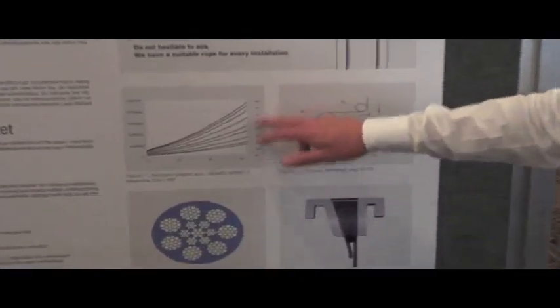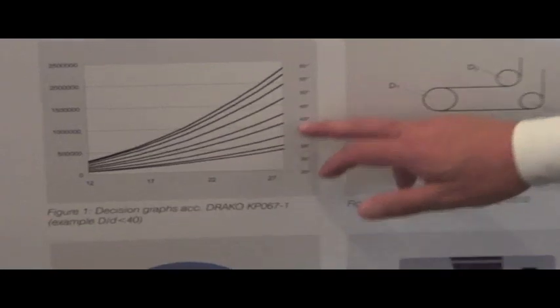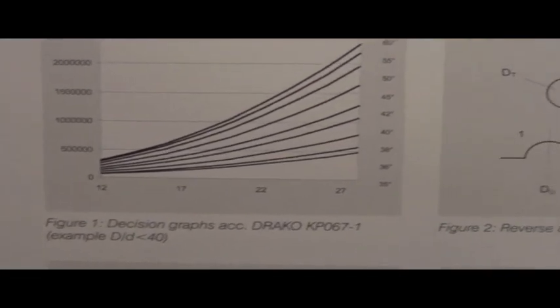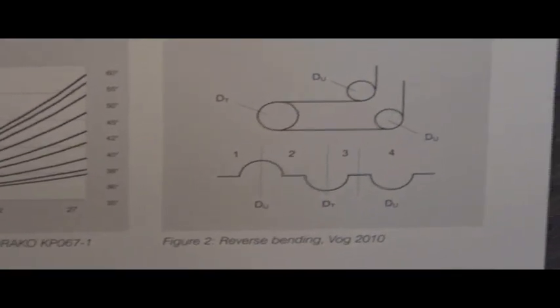And now coming from the traction capacity calculation, you have the possibility to calculate and to see what number of trips are expected until discard. So the EN81-1.1